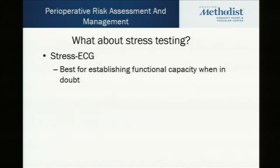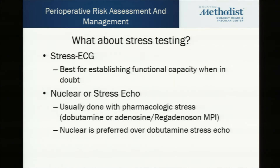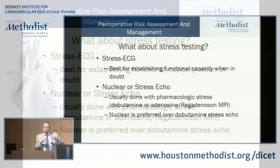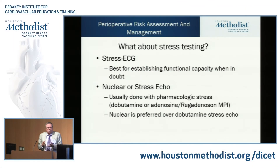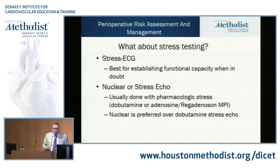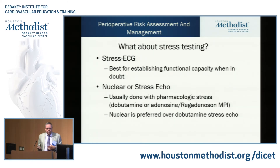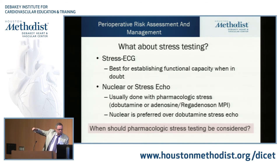A stress EKG can help establish functional capacity when you're not sure from talking with the patient. Nuclear stress tests are usually done with pharmacology because we're dealing with people going for bigger surgery — most are limited by their symptoms and may not be able to use a treadmill. I still prefer treadmill when possible, but most of these patients are older, having hip replacements, and can't get to first base on a treadmill. So we end up with pharmacologic stress, and you have the choice of adenosine, regadenosine nuclear, or dobutamine stress echo. My personal bias is nuclear, but both can be used — there's good data on both.